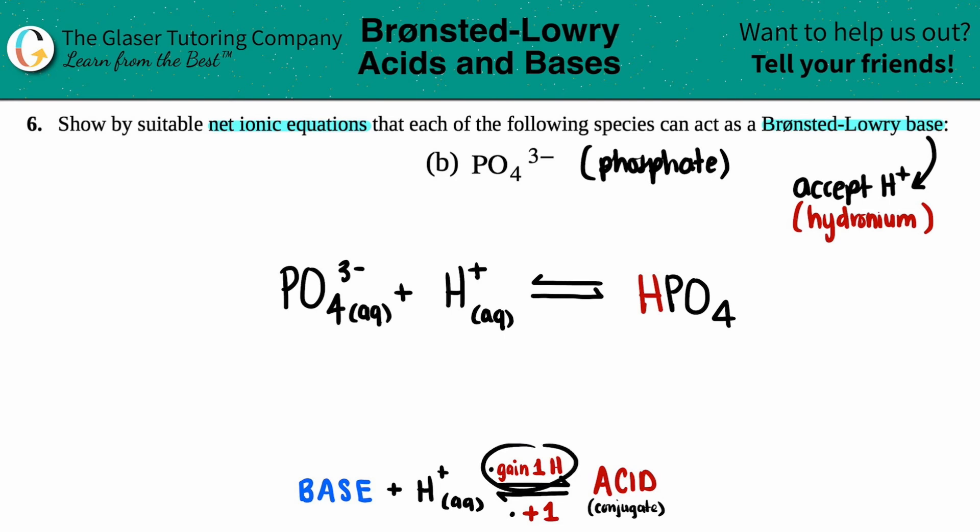You gained one hydrogen. Now I add one to the overall charge. My original phosphate had a 3- charge. Since I gained a hydrogen, or proton, I add one. Negative three plus one is negative two. This is the conjugate acid, so it's aqueous: HPO₄²⁻(aq).